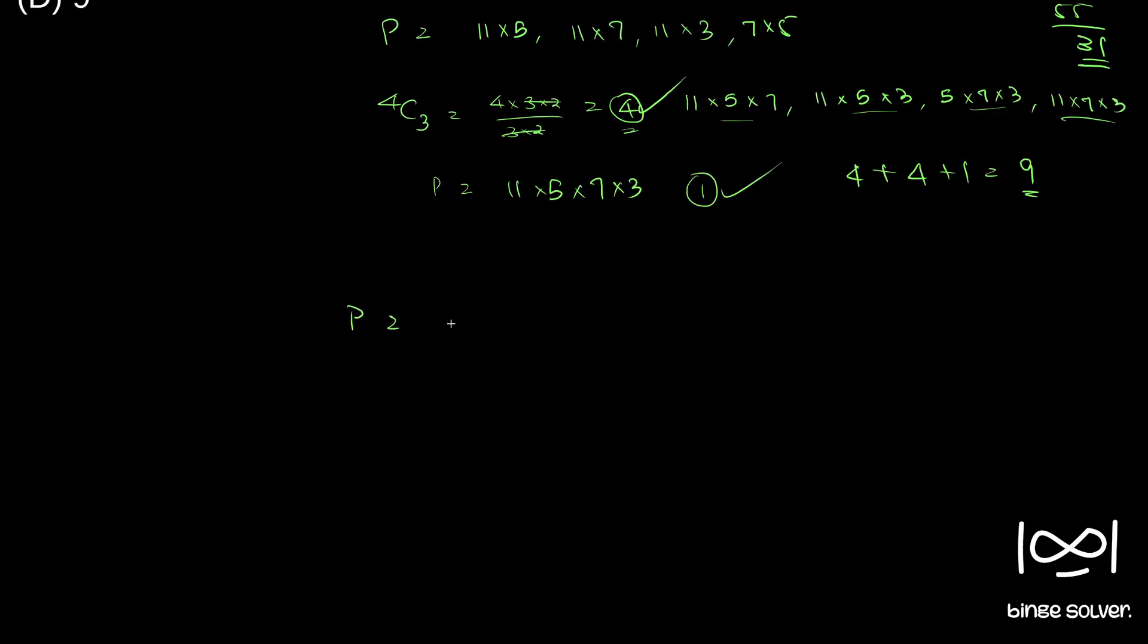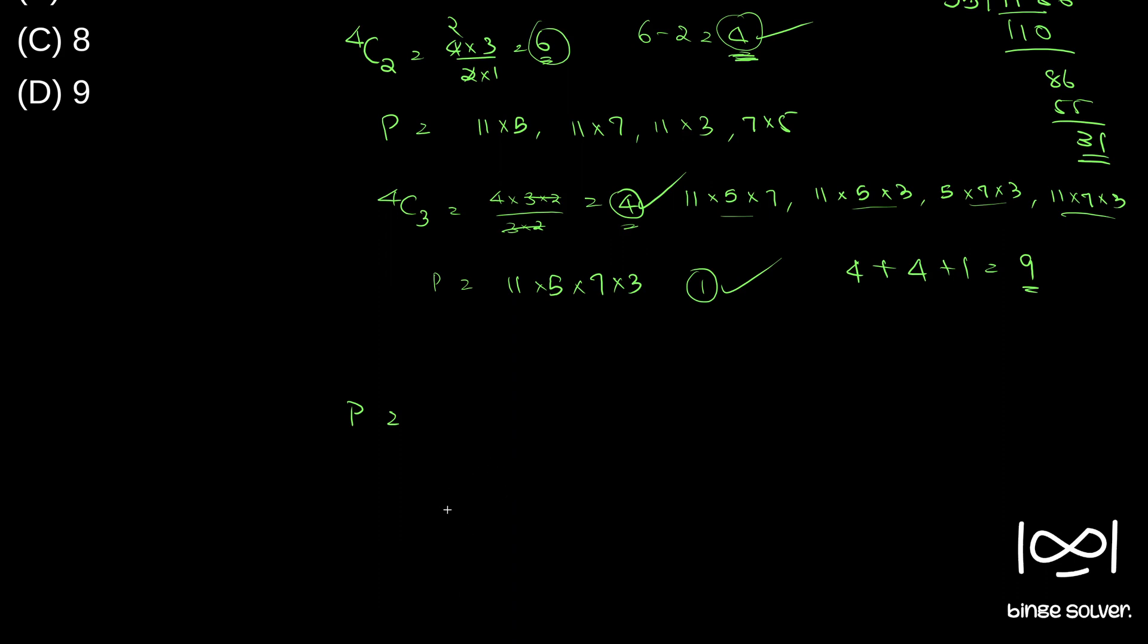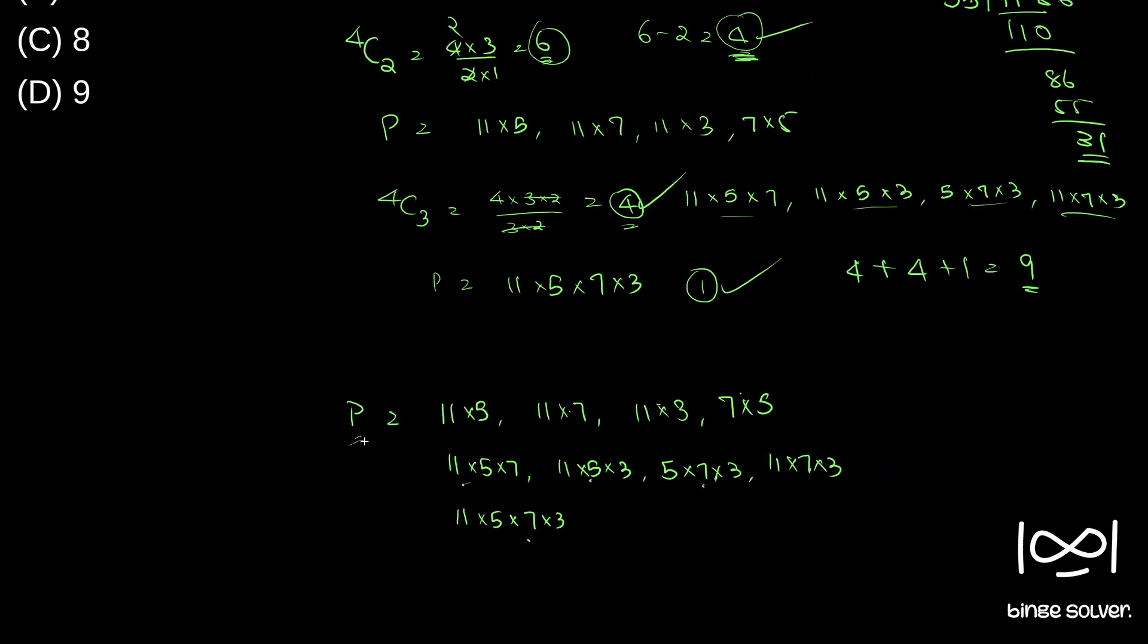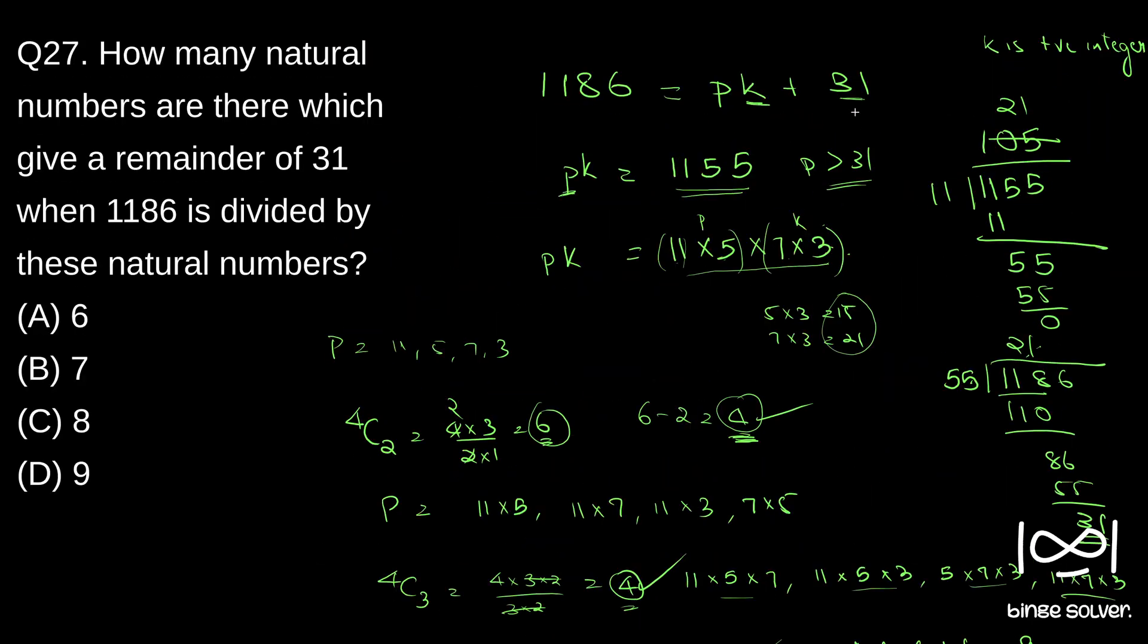So if you are confused, I will just note down all the combinations we just found out which is 11 into 5, 11 into 7, 11 into 3, 7 into 5, and 11 into 5 into 7, 11 into 5 into 3, 5 into 7 into 3, 11 into 7 into 3, and 11 into 5 into 7 into 3. So 1 2 3 4 5 6 7 8 9. The total nine possibilities are there for P which will give remainder as 31 if you divide it with the 1186.